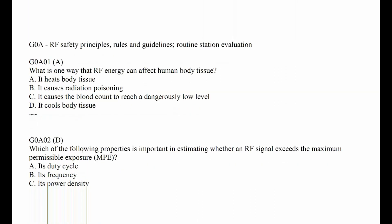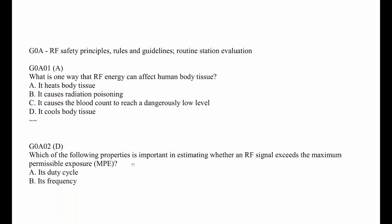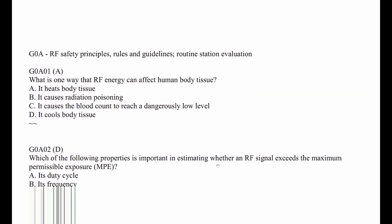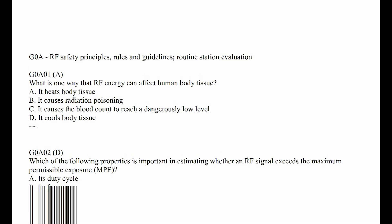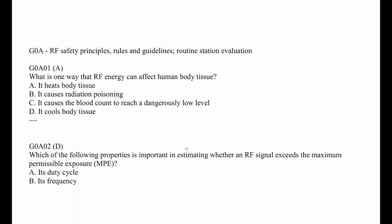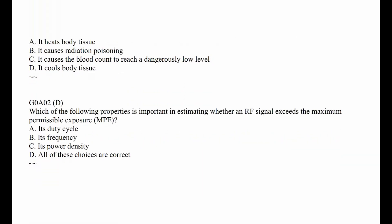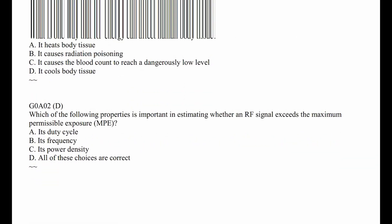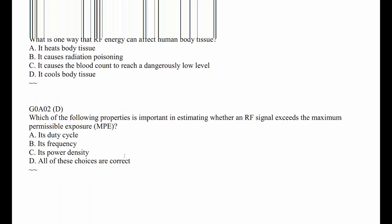G0A02: Which of the following properties is important in estimating whether an RF signal exceeds the maximum permissible exposure, or MPE? Duty cycle, frequency, power density — so how strong it is — and how long it lasts. All those things are correct, so it's D — all of these.